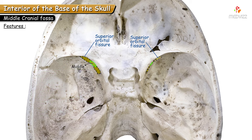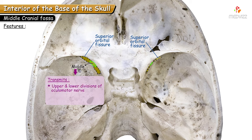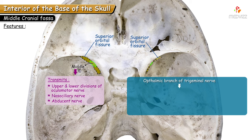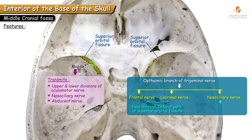Through the middle part, within the common annular tendon, pass the upper and lower divisions of the oculomotor nerve (third cranial nerve), the nasociliary nerve, and the abducent nerve (sixth cranial nerve). The nasociliary nerve is a branch of the ophthalmic division of the trigeminal nerve. Before entering the superior orbital fissure, the ophthalmic nerve divides into three branches: lacrimal, frontal, and nasociliary. Lacrimal and frontal pass through the lateral part, while nasociliary passes through the middle part.